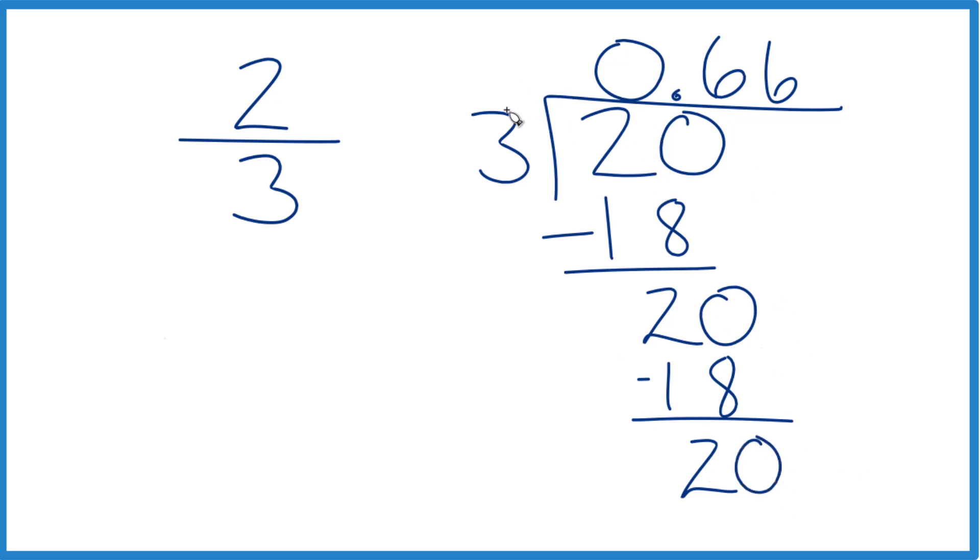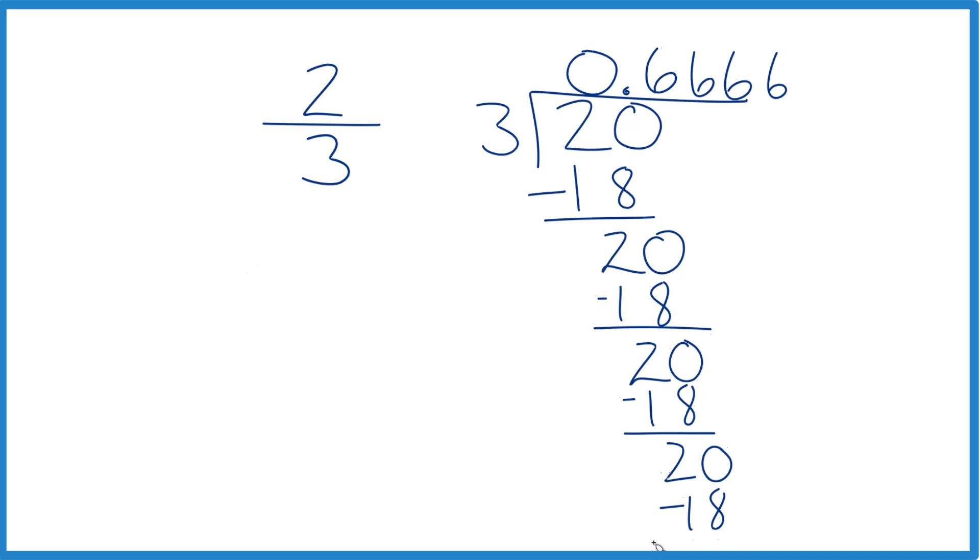This is just repeating. Three times six, so six times three, that's 18. Subtract, you get two. Call it 20. Move over one. Six times three is 18. And just keep going on here.